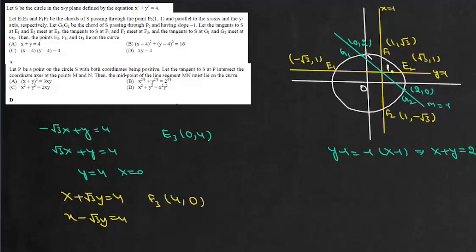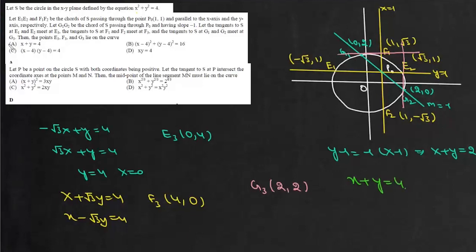The tangents at g1 and g2 meet at g3. Since g1 = (0,2) and g2 = (2,0), their tangent intersection point is simply (2, 2). So g3 is (2, 2). These three points e3(0,4), f3(4,0), and g3(2,2) are collinear and lie on the line x + y = 4. So the answer is option A: x + y = 4.